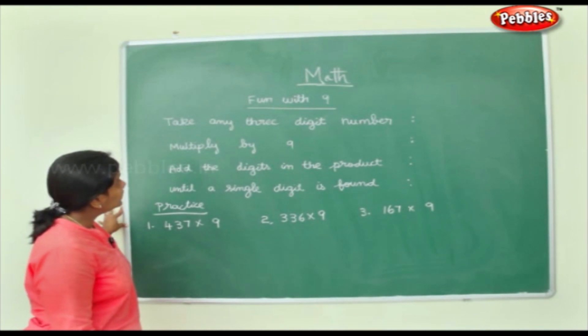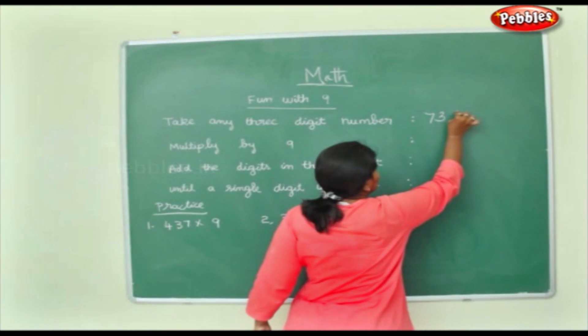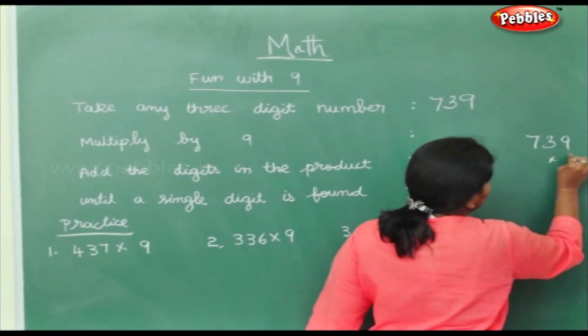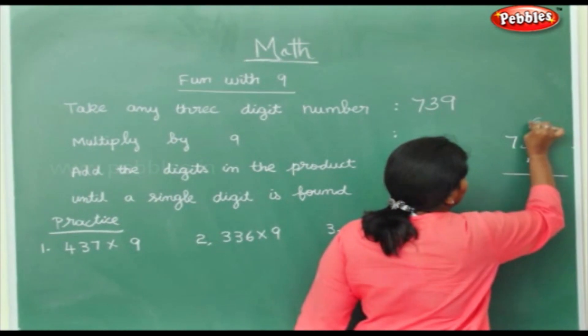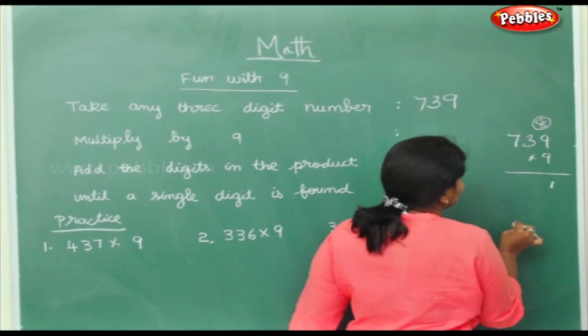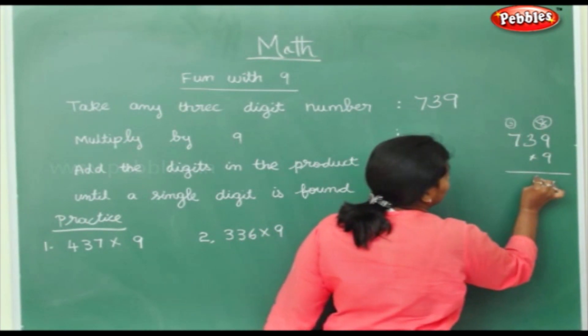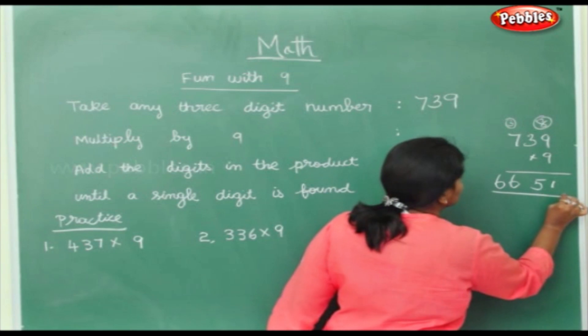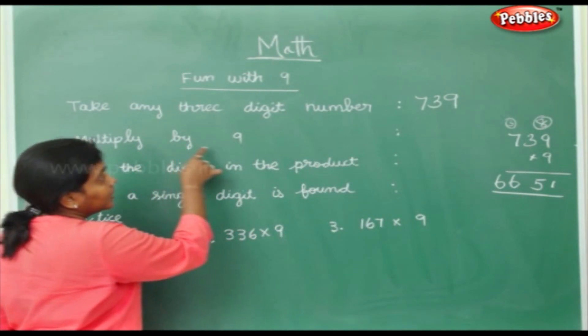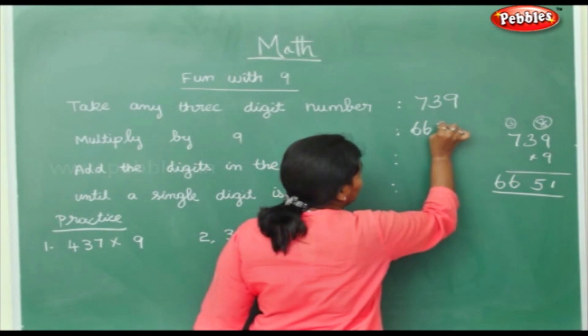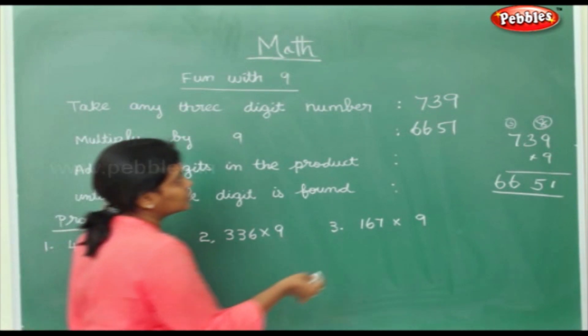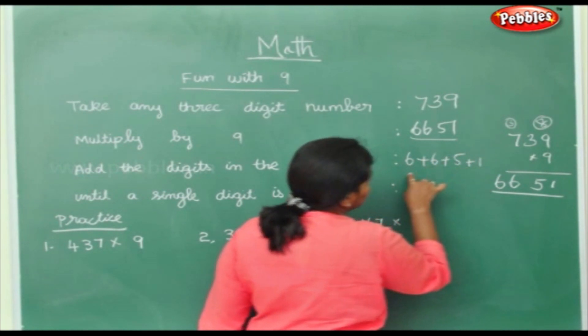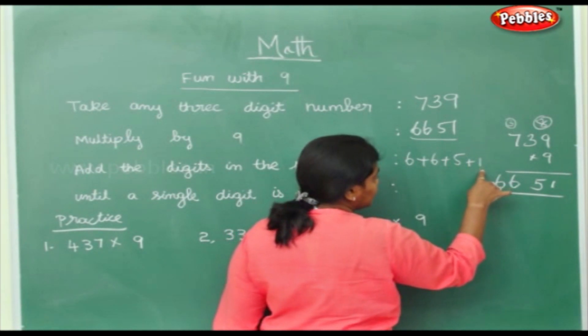Now, fun with the number 9. Take any 3 digit number. 7, 3, 9 I have taken. Multiply it by 9. Now, 739 into 9. 9 9's are 81. 9 3's are 27. 27 plus 8, 35. 9 7's are 63. 63 plus 3 is 66. So multiply by the number 9. You get 6651 is your answer. Add the digits in the product. So this is your product. You have to add it. 6 plus 6 plus 5 plus 1. 6 plus 6 is 12. 12 plus 5 is 17. 17 plus 1 is 18.